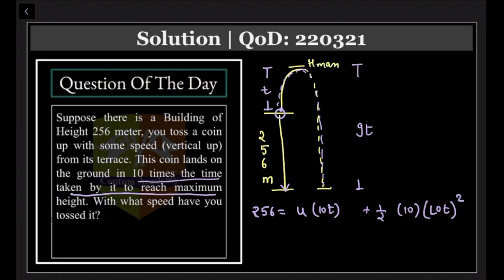Now please go with the sign. Your displacement is in this direction, your release speed was up, so I will make it a minus sign here. So you will get a quadratic equation as 500t square minus 10ut minus 256 equal to 0.